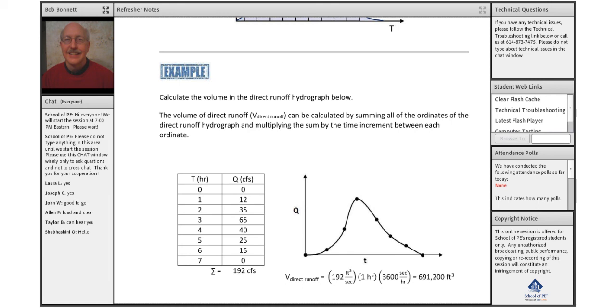The volume of the direct runoff hydrograph can be calculated by summing all the ordinates of the direct runoff hydrograph and multiplying the sum by the time increment between each ordinate. We see a time increment is every hour: hour zero, hour one, hour two, et cetera. So we sum up those ordinates, which are here: 12, 35, your peak is at 65 cubic feet per second. Add those up, you come up with 192 cubic feet per second.